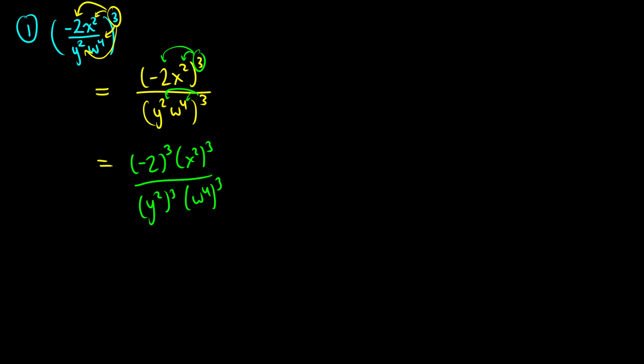Because we have the form x to the m raised to the n, this equals x to the m times n — the exponents multiply each other. So negative 2 cubed is negative 2 times negative 2 times negative 2, which gives us negative 8.